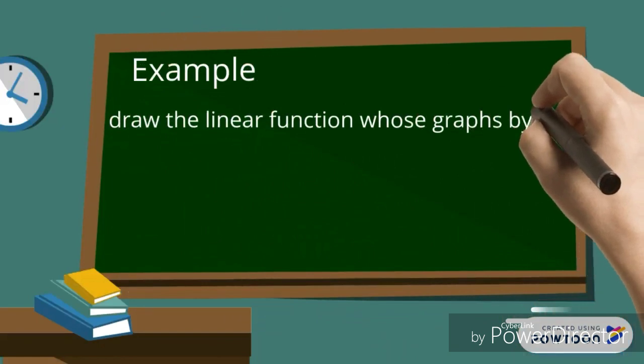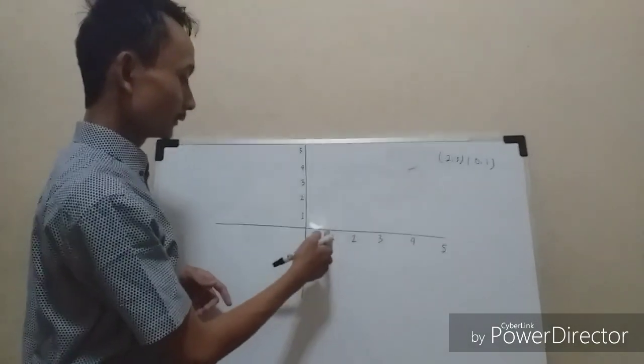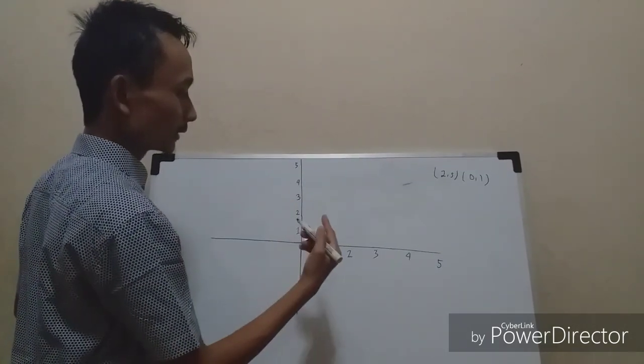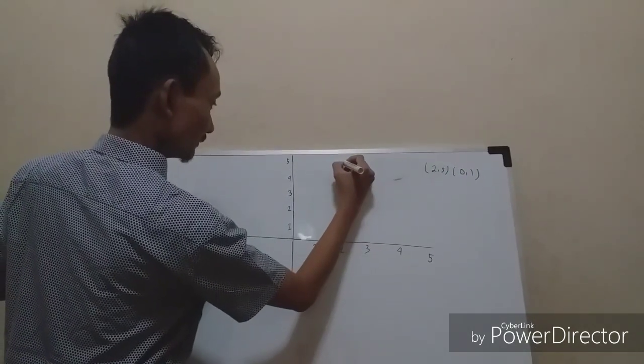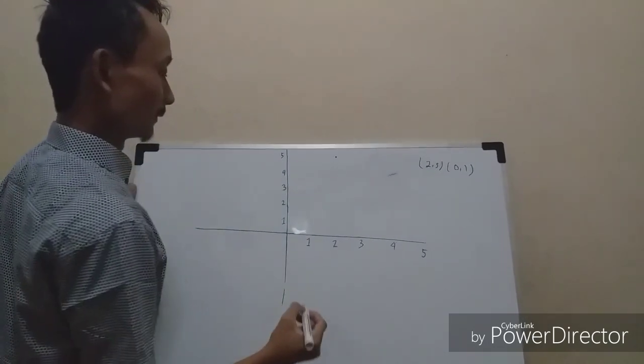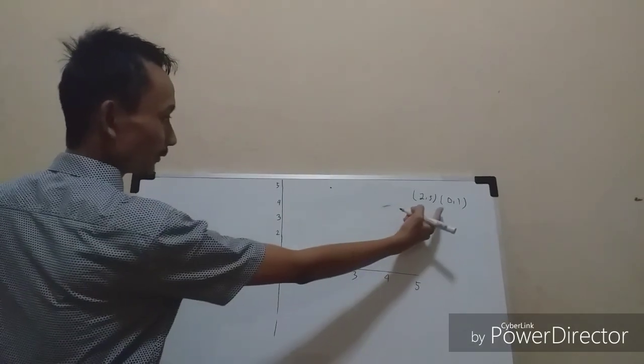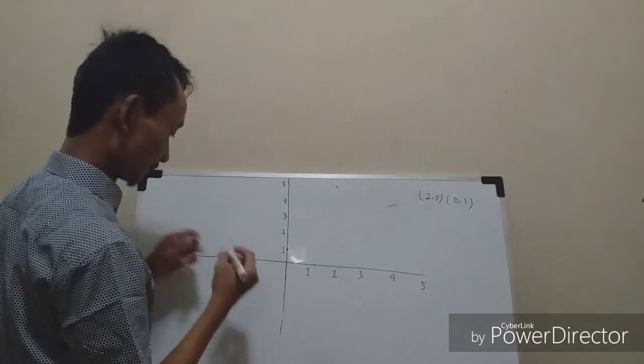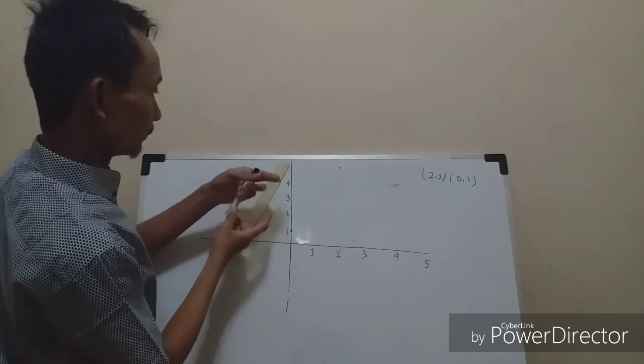For example, a linear function would graph through the points (2,5) and (0,-1). First, you draw a Cartesian diagram. Then plot the point (2,5), where X is 2 and Y is 5. Then plot (0,-1). And lastly, connect the points.